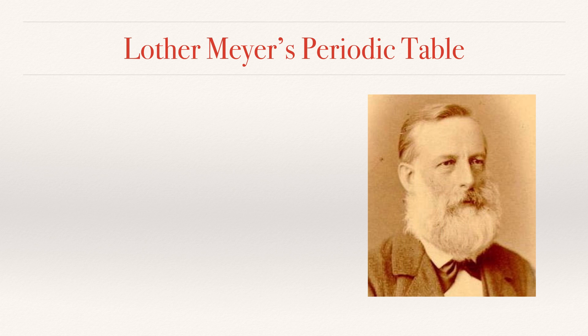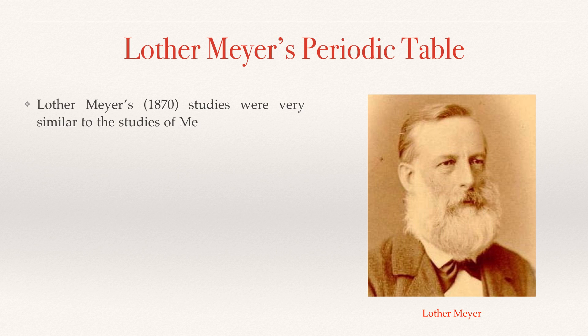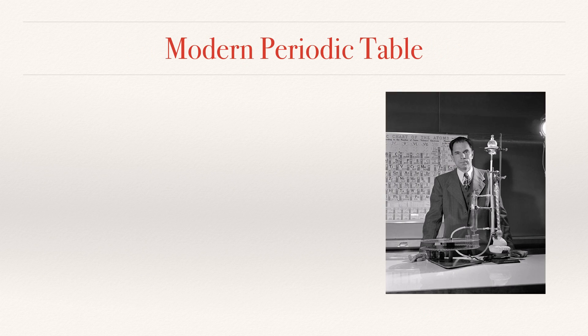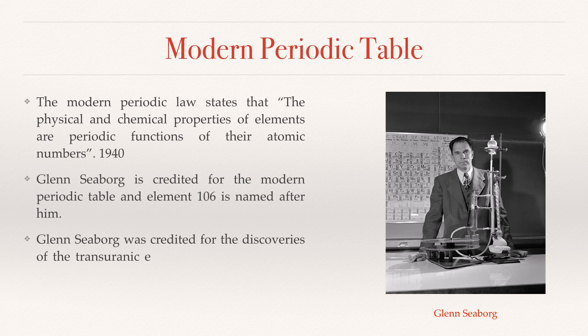Lothar Meyer's Periodic Table. Lothar Meyer's studies were very similar to those of Mendeleev — he also arrived at a similar arrangement of elements based on atomic weights in 1868. However, he gave his paper to a friend for reading, so when he published it, it was after Mendeleev had already published his findings. For this reason, there is always discussion as to who is the father of the periodic table.